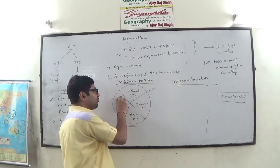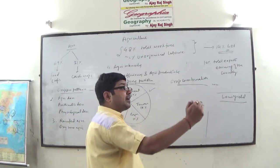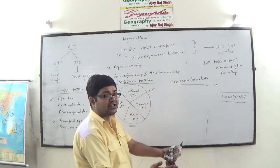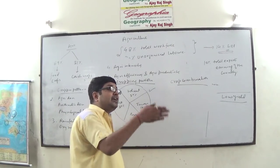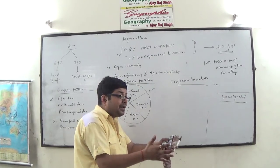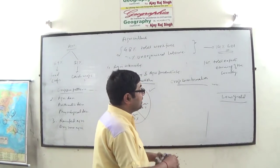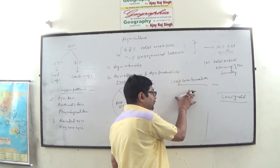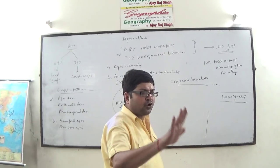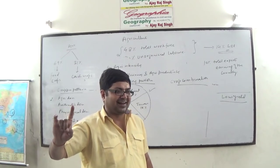Cropping pattern and crop combination are two different things. At a given place, what proportion of land is being occupied by different crops is cropping pattern. Over the period of a year, first you harvest rice, then wheat, then pulses — that is crop combination. Crop combination means what all different crops are being cultivated in any area in a given agricultural year. In India, we have 15 crop zones, and in every crop zone a particular crop occupies the largest area.